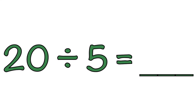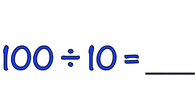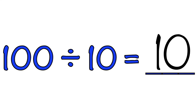How about 20 divided by 5 equals blank? The answer is 4! Let's skip count by 5 until we reach 20 — 5, 10, 15, 20. That is 4. How about 100 divided by 10 equals blank? The quotient is 10! Let's skip count by 10 until we reach 100 — 10, 20, 30, 40, 50, 60, 70, 80, 90, 100. That is 10.